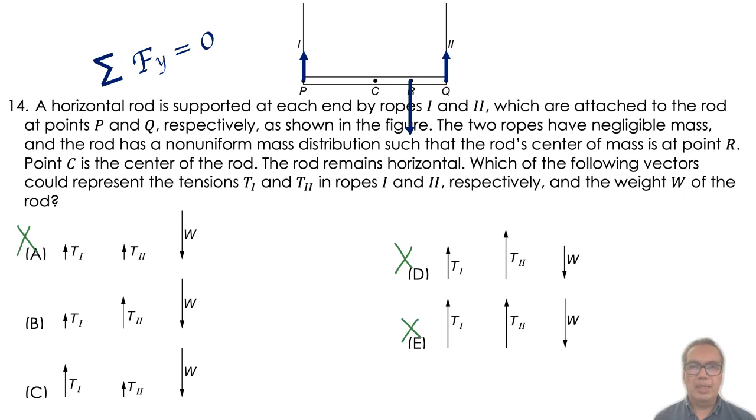On the other hand, the net torque about any axis along the rod must be zero. In particular, consider an axis passing through the center of mass.